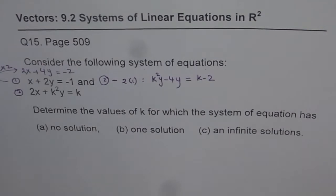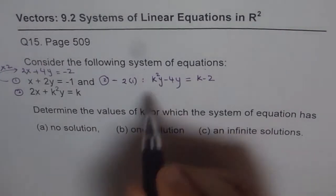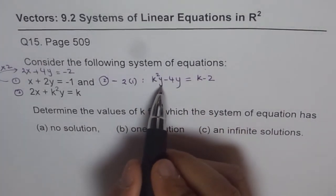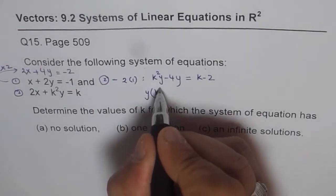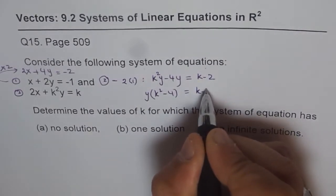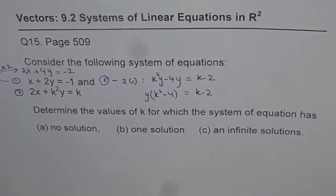And now we will factor this. So we can factor this. So once I factor, we can take away y common, so we get y here, and we have k square minus 4 equals to k minus 2, correct? That is what you get.